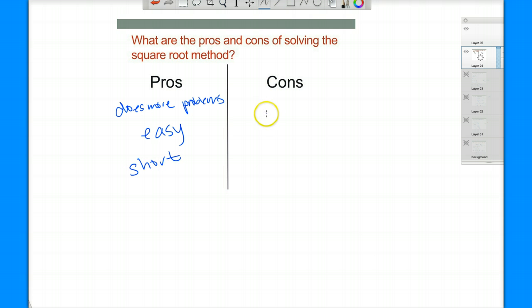What are the cons? It still doesn't do every problem. It only does problems where you have something squared equals a number. So it doesn't do every problem. You get radicals because you're taking the square root. So some of you might not like radicals to simplify. But other than that, there aren't a lot of drawbacks.